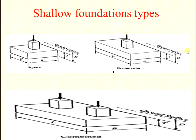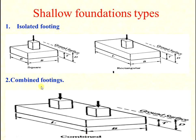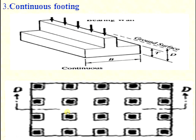The types of shallow foundations include: square footing — where length and breadth are the same; rectangular footing — where length is more than breadth; combined footing — where two columns share one footing; and continuous footing — where columns are constructed in continuous construction.